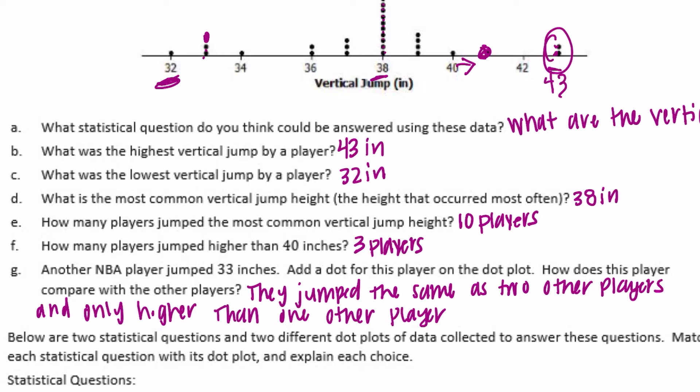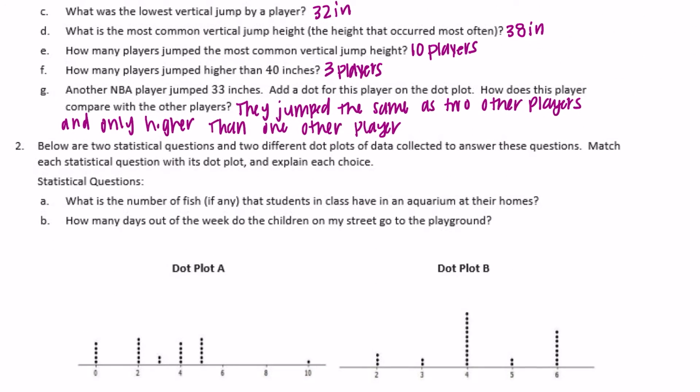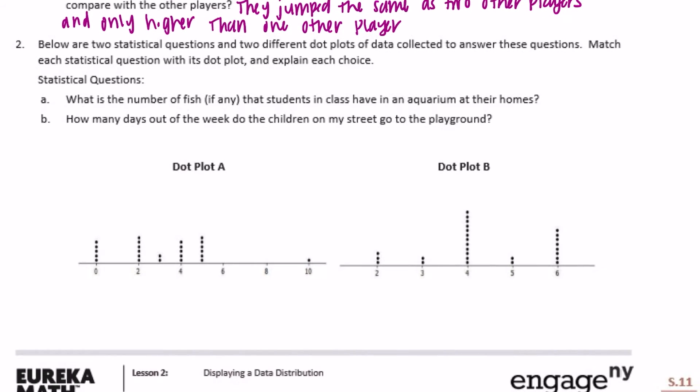Number two. Below are two statistical questions and two different dot plots of data collected to answer these questions. Match each statistical question with its dot plot and explain each choice. Question A: What is the number of fish, if any, that students in the class have in an aquarium in their homes? So it could range anywhere from zero fish to ten fish. Or dot plot B would be anywhere from two fish to six fish.